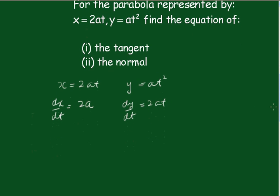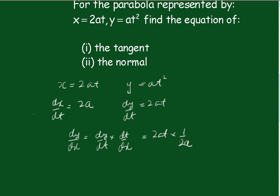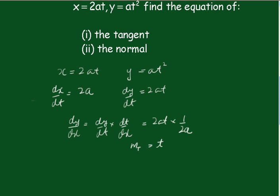Now remember the chain rule. We know that dy/dx equals dy/dt times dt/dx. Now dy/dt is 2at, and dt/dx is just the reciprocal, so it's times 1 over 2a. That gives us t. So the gradient of the tangent is equal to t.